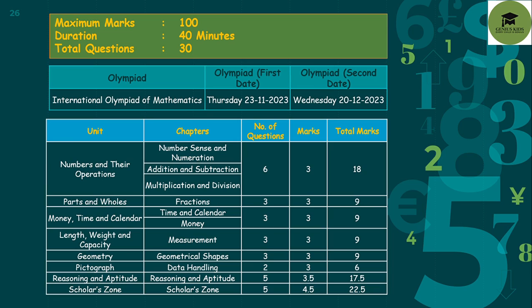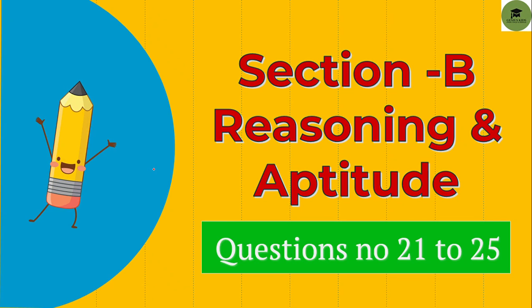These are the syllabus. In section A I already shared 20 questions of the mathematics part — you can find the part 1 link in the description box. Friends who are still not subscribed, please subscribe to the channel for more videos and more practice sets about the Olympiad exams. Now let's start section B: reasoning and aptitude part.